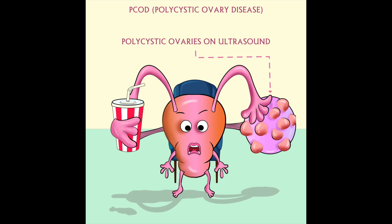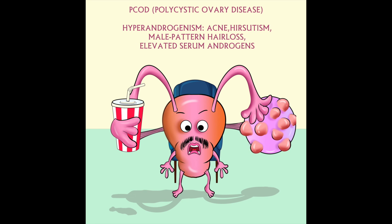Next is polycystic ovaries on ultrasound examination. Here you can see the cystic appearance of the ovary. Next point is hyperandrogenism, which means higher level of androgens. It can cause acne, hirsutism and male pattern hair loss. Here the growing hair on face and scanty hair on scalp will help you to remember those points.